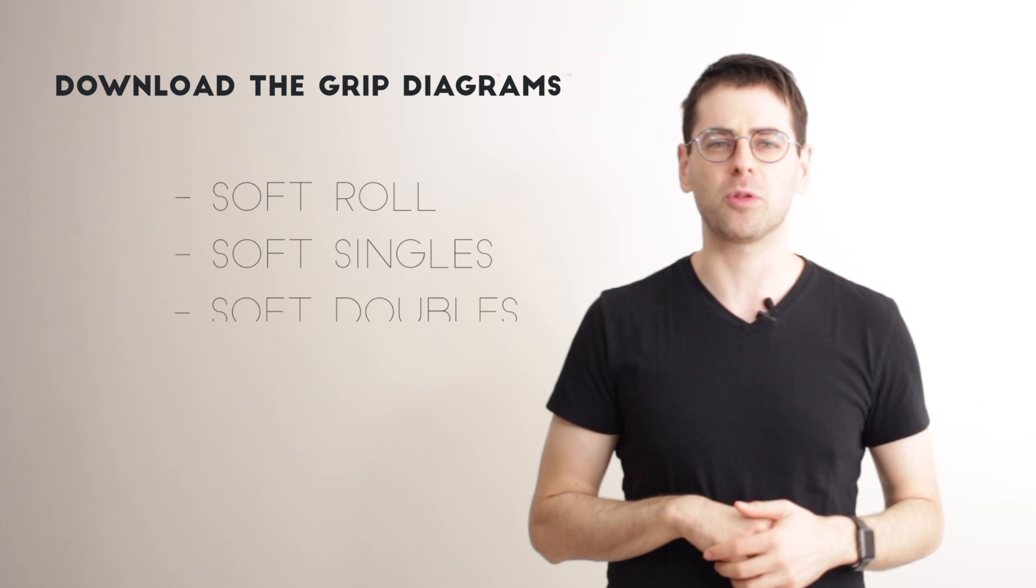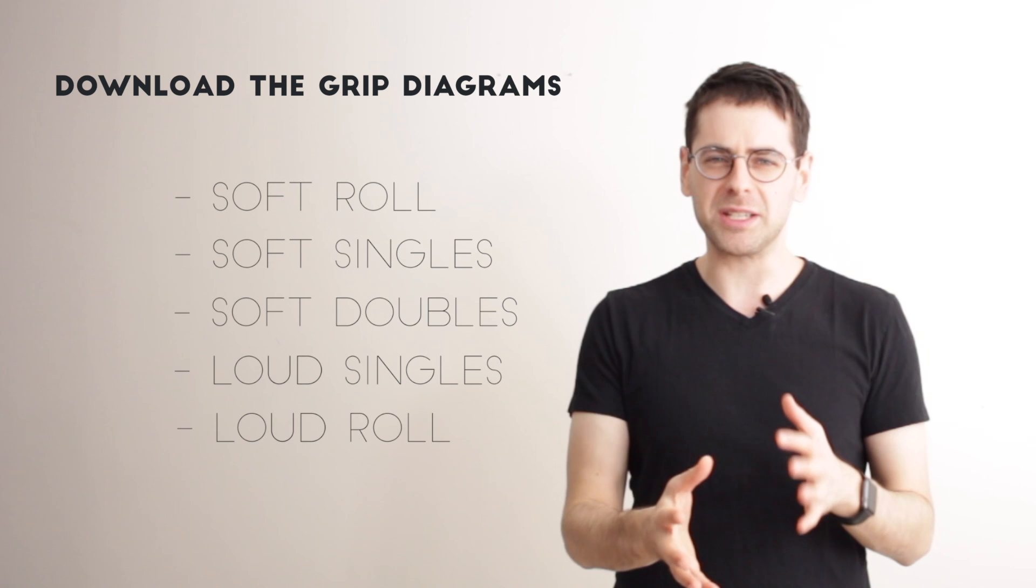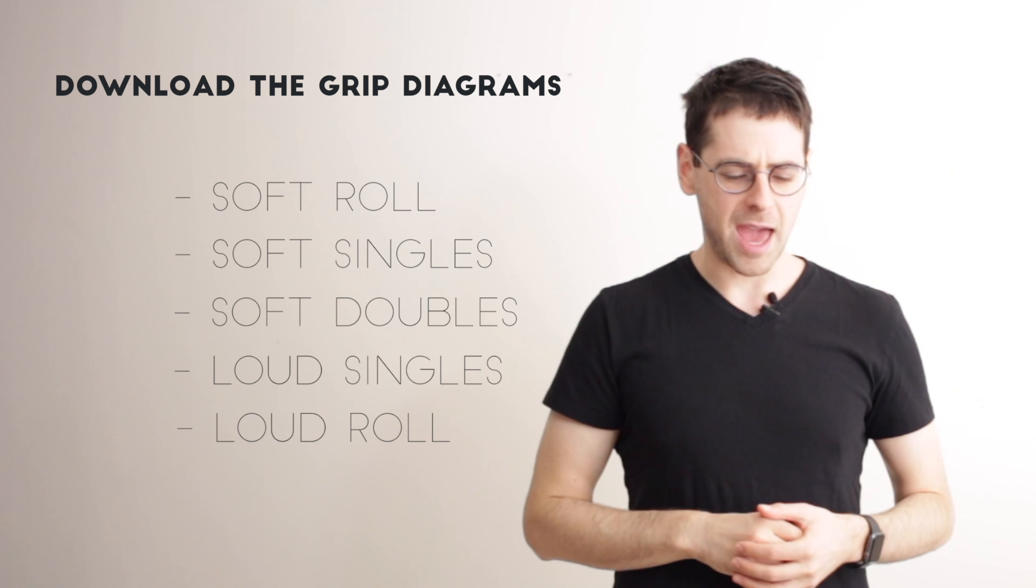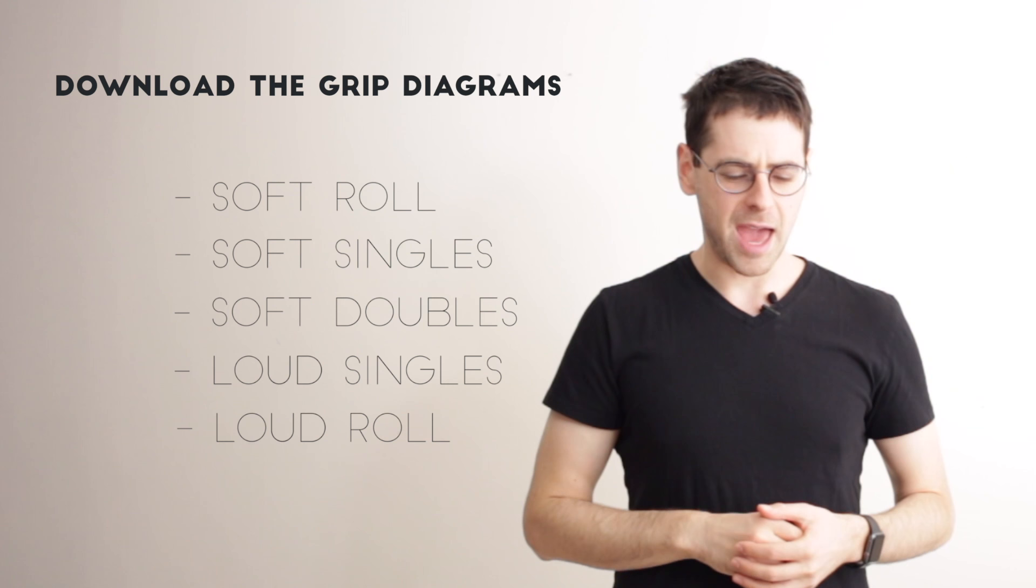I made this diagram of my five most commonly used snare drum grips that makes up my school of playing—the way I usually hold the sticks. I tried to get really detailed and go in depth about the exact angles my fingers have in comparison with the sticks and exactly which knuckles the stick lines up with for different things. I made this diagram as a PDF. You can download it now at robknopper.com/fivegrips. Thanks for watching.